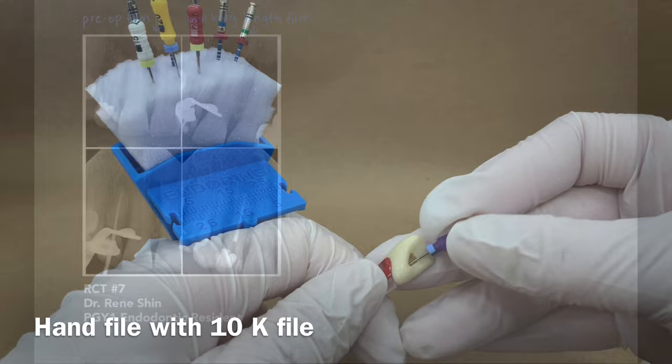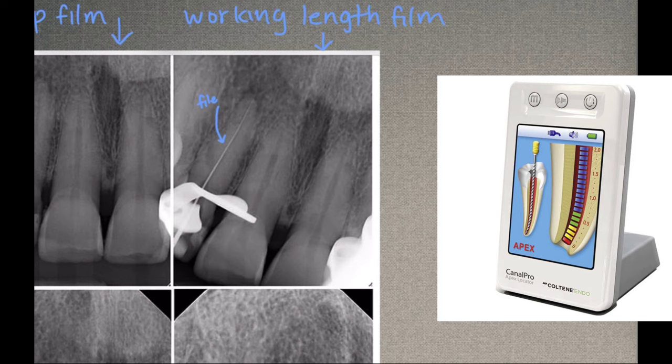In clinical practice, the working length is determined by using an apex locator and or taking a working length radiograph with a file in the tooth.